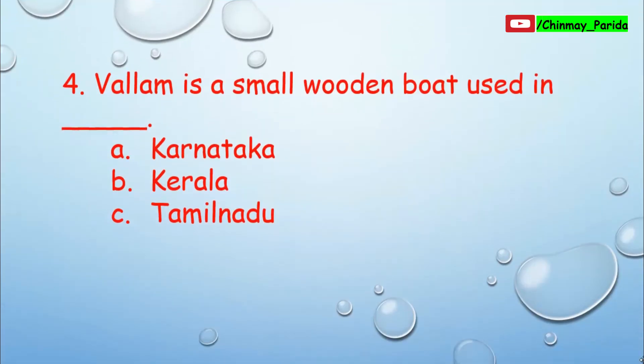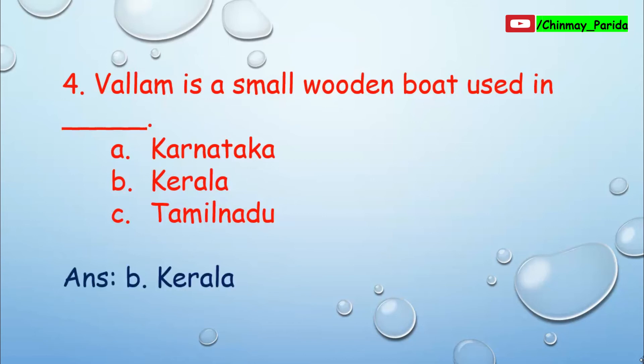Question number 4. Wallam is a small wooden boat used in which state of India? A small wooden boat used to cross water bodies — option A: Karnataka, option B: Kerala, option C: Tamil Nadu. The correct answer is option B, Kerala. In Kerala, small wooden boats named Wallam are used.